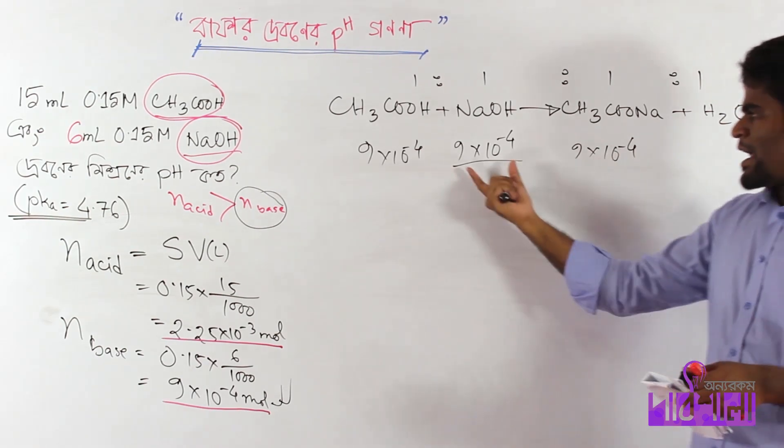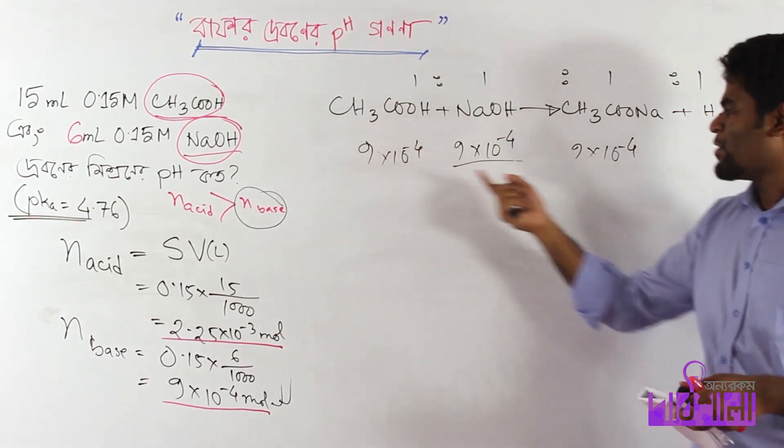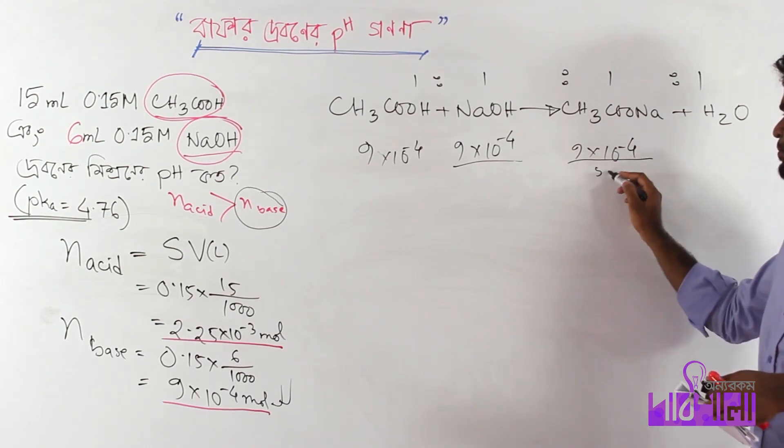Base is 9 times 10 to the power minus 4 mol. All the base reacts with an equal amount of acid to produce salt.